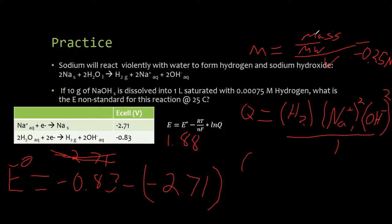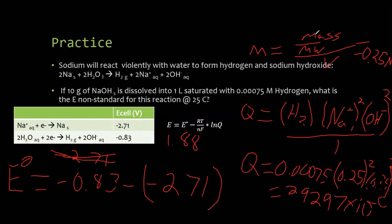So our Q is equal to 0.00075 times 0.25 squared times 0.25 squared or essentially 0.25 to the fourth power. Times that by our hydrogen. Our Q is equal to 2.92, let's say, 0.97 times 10 to the negative six. Negative six. I'm going to erase some of my stuff. Erase this just so I can have some room to work.